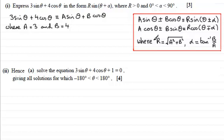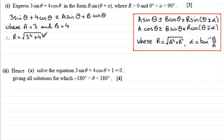Therefore r equals the square root of a² + b², so in this example it's √(3² + 4²) = √(9 + 16) = √25 = 5. We always take the positive value in these kinds of questions.